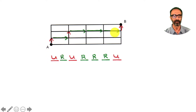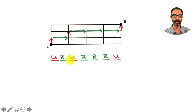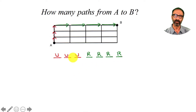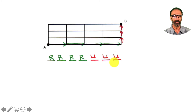By now you probably notice something: in all three examples, the count is the same — four rights and three ups. So the question becomes: how many ways can you order these R's and these ups? That will give you how many ways you could go from A to B.